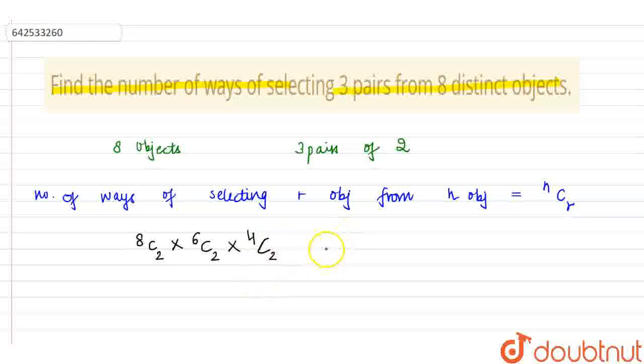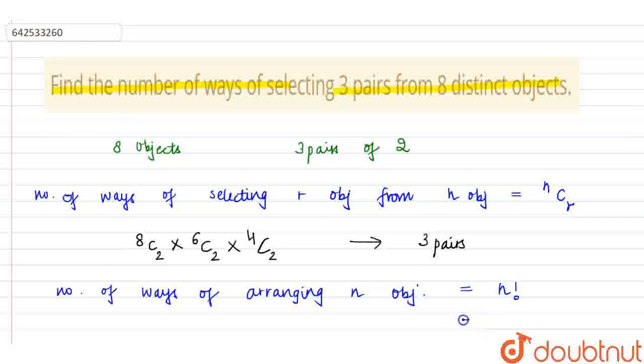So this is our number of ways for selecting these 3 pairs. Now, we also know that number of ways of arranging N objects is equals to N factorial. So we have 3 pairs here. This becomes equals to 3 factorial and 3 factorial is equals to 6.